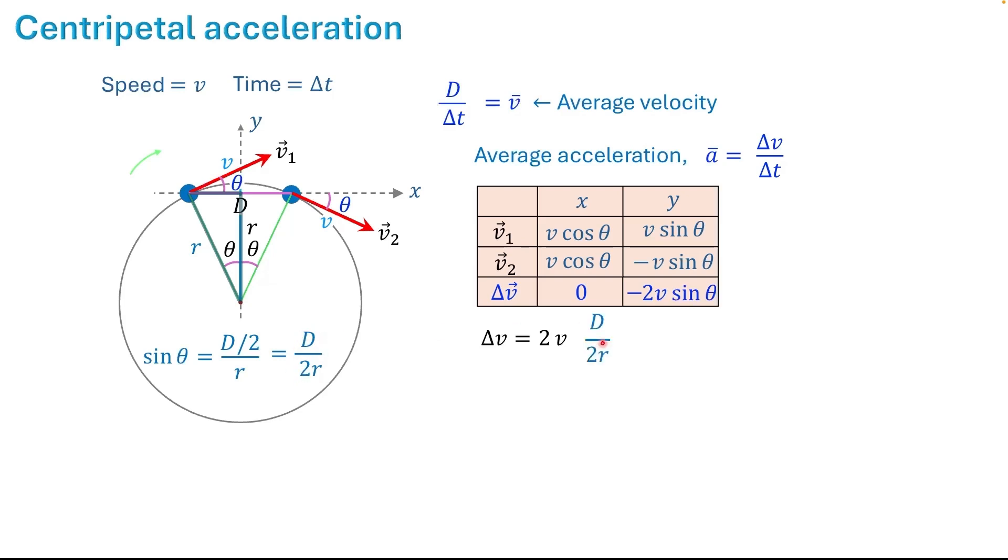Now, substitute this for sine theta. Cancel out 2 and 2 to get delta v equals v over r times d. Now divide both sides by delta t. Delta v divided by delta t equals v over r times d over delta t. Delta v over delta t is the average acceleration, and d over delta t is average velocity.